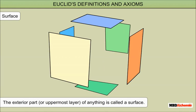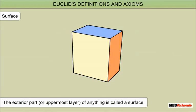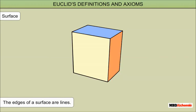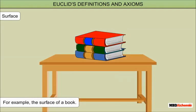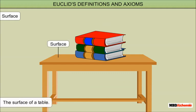Surface: The exterior part or uppermost layer of anything is called a surface. The edges of a surface are lines. For example, the surface of a book, the surface of a table, and the surface of the earth.